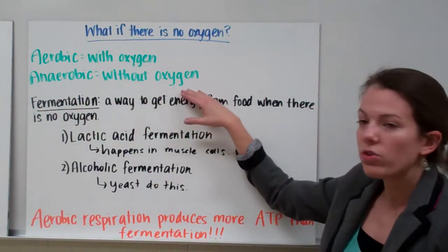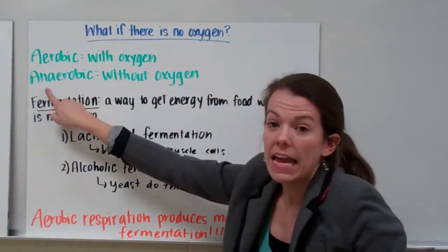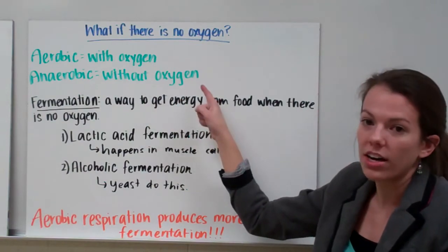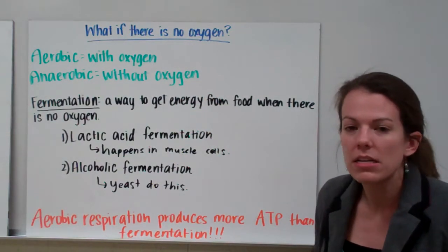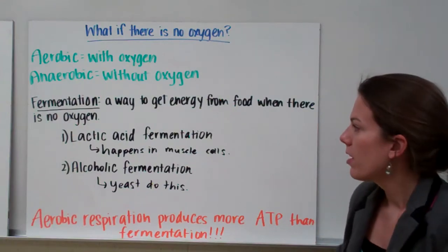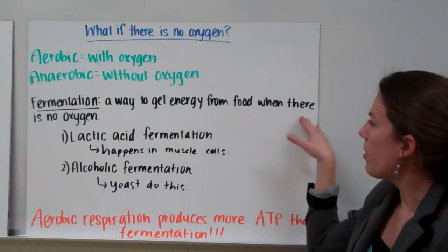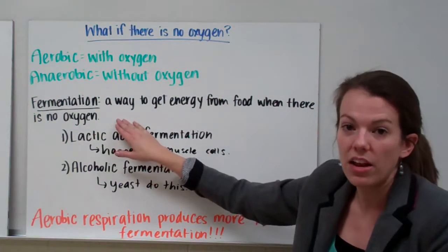Anaerobic means without oxygen. This prefix 'an' means without. An anaerobic environment does not have much or any oxygen present. Fermentation is a way to get energy from food when there is no oxygen, so in anaerobic conditions. Fermentation is one way to continue to get energy from your food when there's no oxygen present.